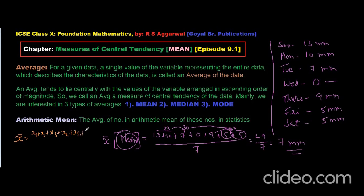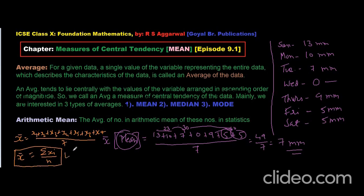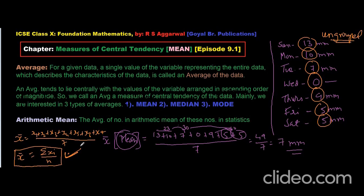So if there are n number of observations, we will calculate using the formula: x̄ is equal to σxi upon n, where n is the total number of observations, σxi is the addition of all the observations, and x̄ is the mean. This formula is basically used to find the average mean of a data, and this data is actually nothing but ungrouped data. This method — σxi upon n for finding x̄ — can be used very easily for ungrouped data. But what about grouped data?